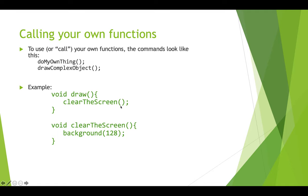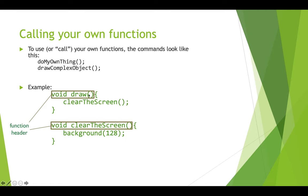All functions have brackets after them — sometimes there's stuff in between the brackets. This is called the function header: void draw(), void clearTheScreen() — that's the function header. And the stuff that's in between the open and close braces is called the function body.